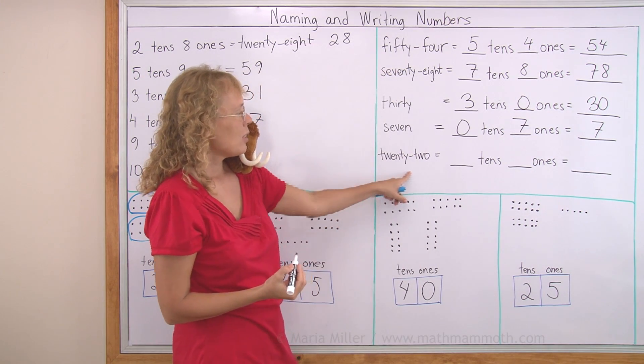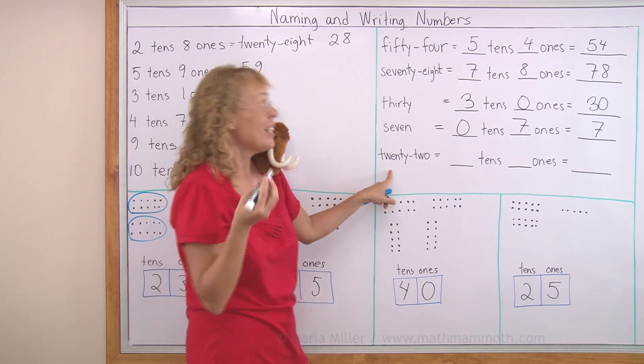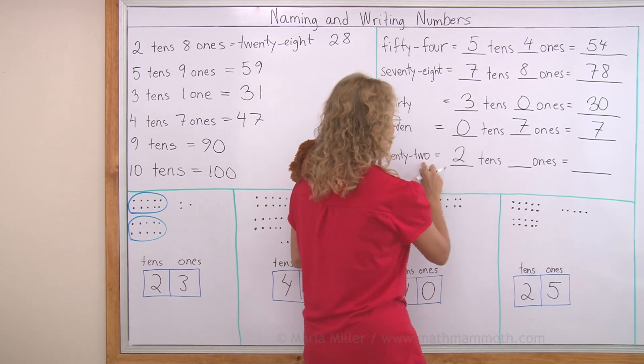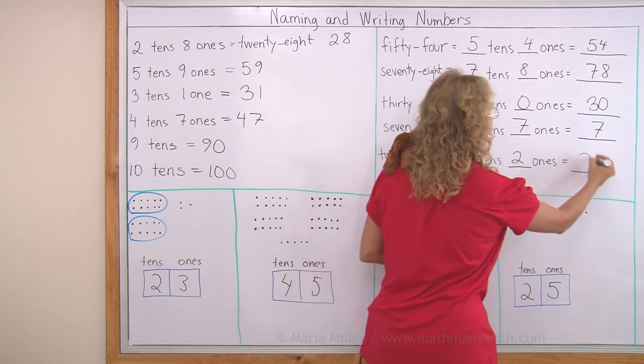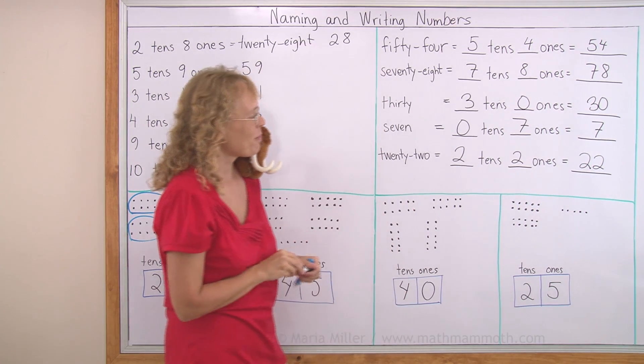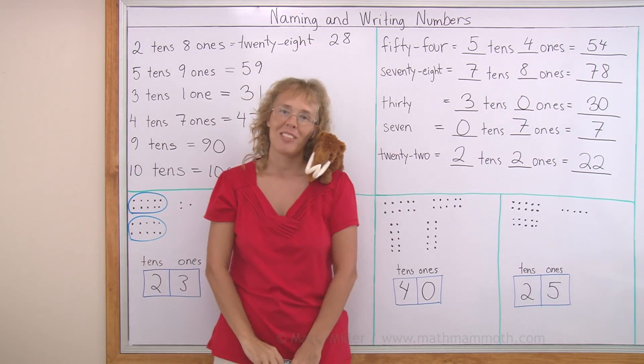22. 20 was... Yeah, you remember, 2 tens and then 2. So this is 2, 2. 22 is written as 2, 2. Okay. Well done with this lesson.